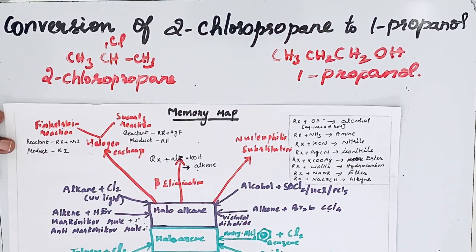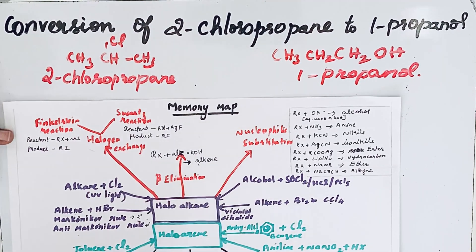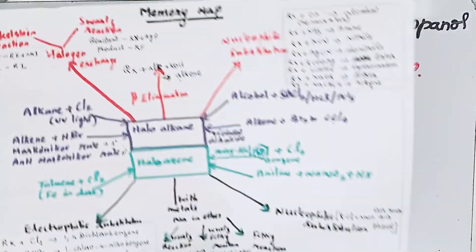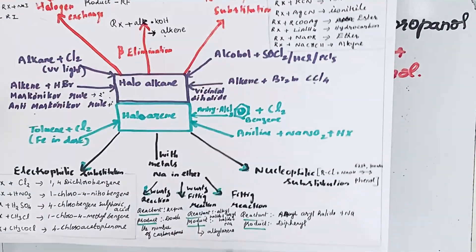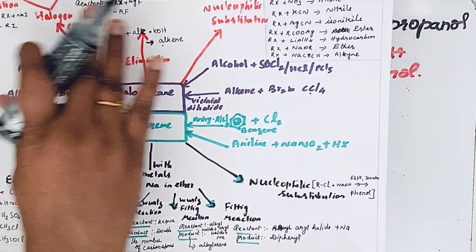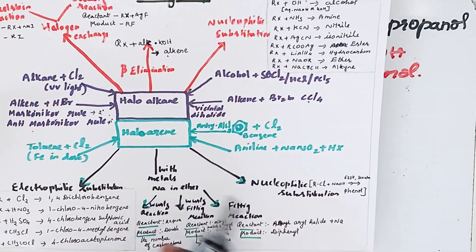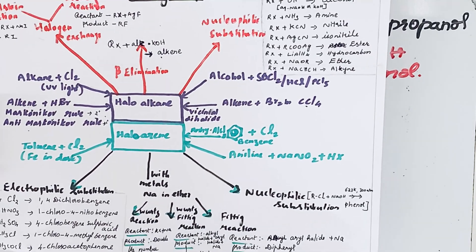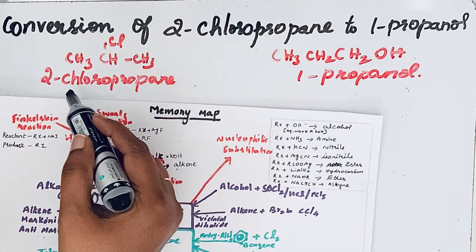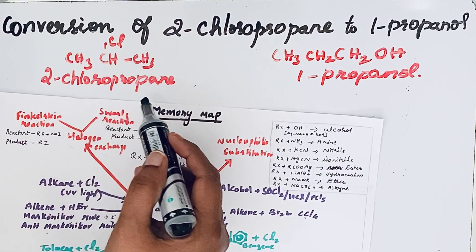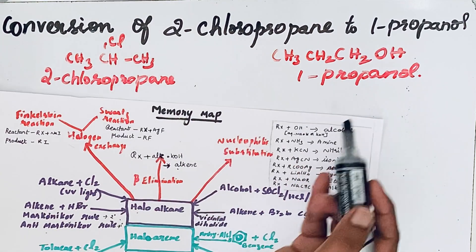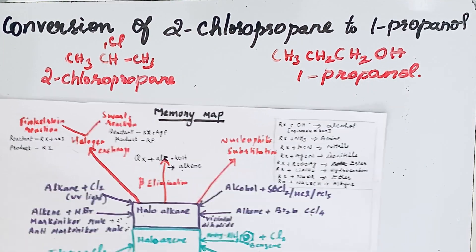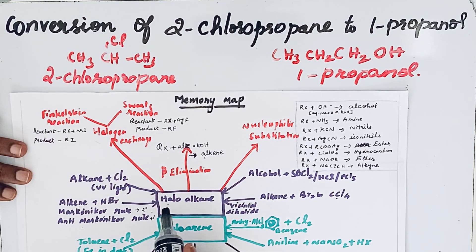This conversion can be done very easily by using this memory mapper. In this memory mapper, all reactions involving haloalkanes and haloarenes are given in a very simple way. Here, both 2-chloropropane and 1-propanol come under haloalkanes, so we will concentrate only on haloalkanes.